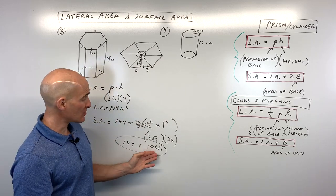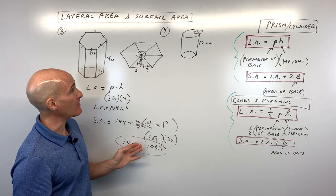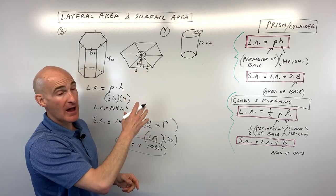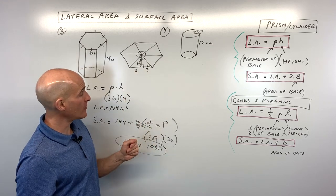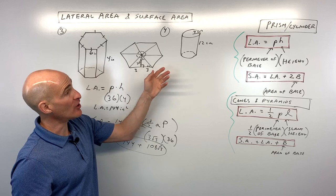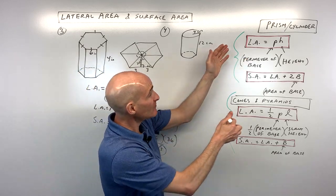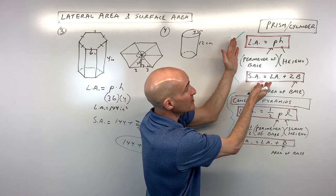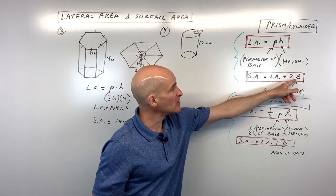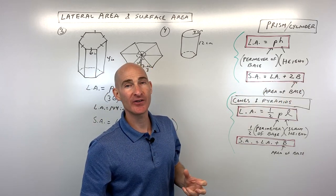That exact answer can be approximated using a calculator. This example combined the one-half apothem times perimeter formula, special right triangles, and the general surface area formulas — but if you know the general formula, you can always break it down into sub-formulas, which reduces how much you need to memorize.